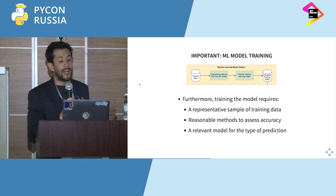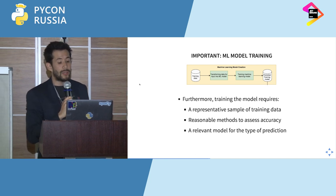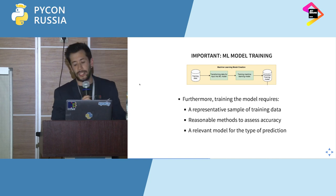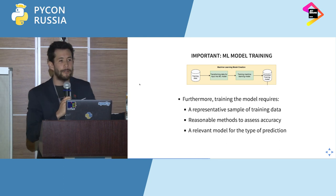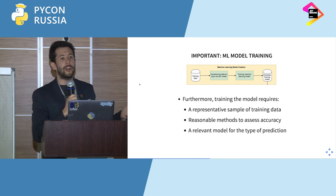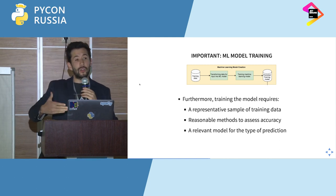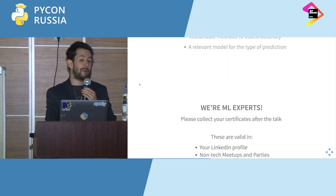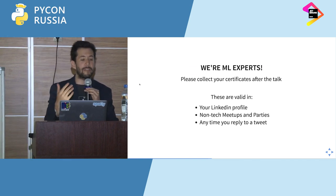Furthermore, you need to understand your actual training data. You need to make sure you get a representative sample. If you only got cryptocurrency numbers for a very short time window, you're not going to be able to generalize as much. You also need to have reasonable methods to assess accuracy, as well as a relevant model for the type of prediction you're doing.